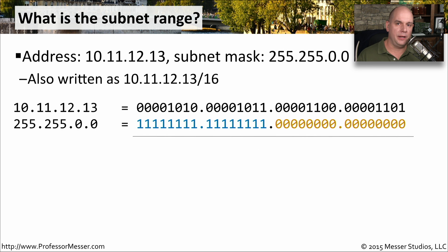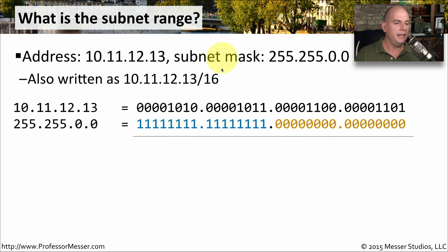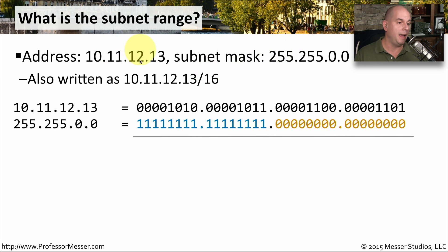Let's perform the exact same calculation again — it's the same process every time regardless of the IP address or subnet mask. Convert to binary, perform the bitwise AND, change zeros to ones for broadcast. Here, the device is 10.11.12.13 with a subnet mask of 255.255.0.0. In CIDR notation, that's 10.11.12.13/16, because there are 16 bits set in the subnet mask. Writing both in binary, every place there is a 1 in the subnet mask is the network address.